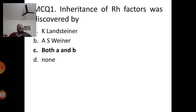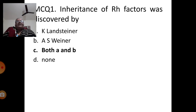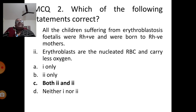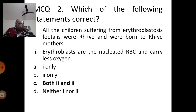Assessment question 1: The inheritance of Rh factor was discovered by (a) Landsteiner, (b) Wiener, (c) both A and B, (d) none. The correct answer is C — both Landsteiner and Wiener. Question 2: Which statement is correct? (1) All children with erythroblastosis fetalis were Rh positive born to Rh negative mothers; (2) erythroblasts are nucleated RBCs carrying less oxygen. The correct answer is C — both statements are correct.